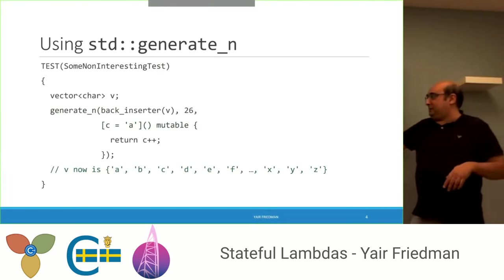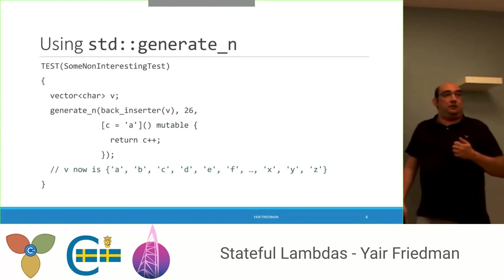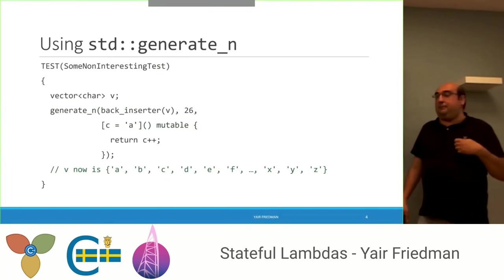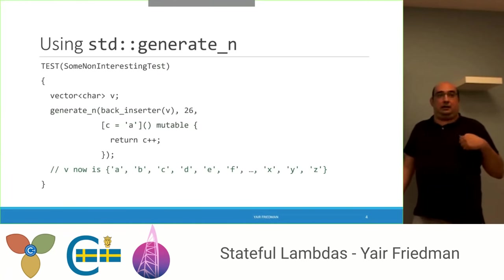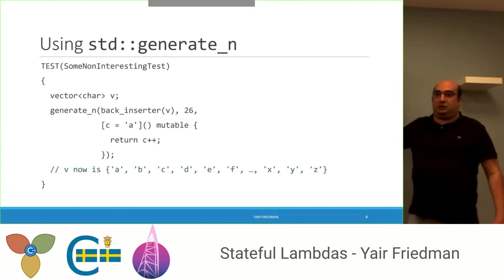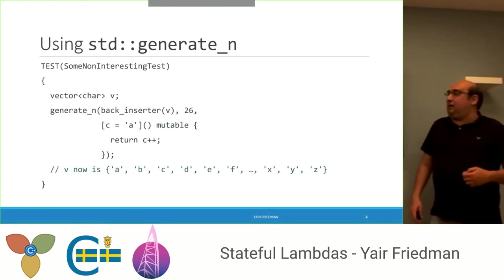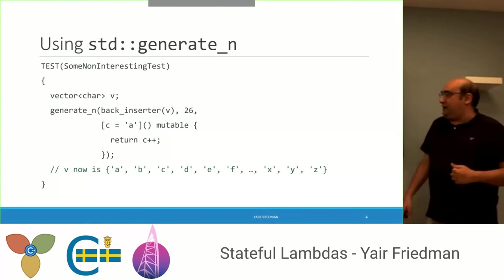What is a stateful lambda? Just let's look at the lambda over here. Stateful lambda is new in C++14. It's a feature that enables us to define new variables and initialize them in the initialization list over here. And then, not only can we initialize them, we can further mutate them. They are updated on each call of the lambda — we get the same variable updated. That also makes the lambda mutable.